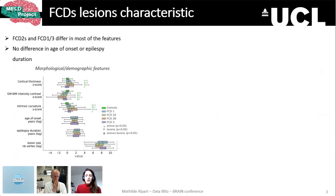We highlighted features that were statistically different from each other in mean and variance using ANOVA and Levene tests. As an example, we can see that FCD2 — in light green and red — presents a significant difference in cortical thickness compared to other FCDs, which are in blue and purple, and compared to controls in bright green. Whereas there is no statistical difference in age of onset or epilepsy duration between these histopathologies.